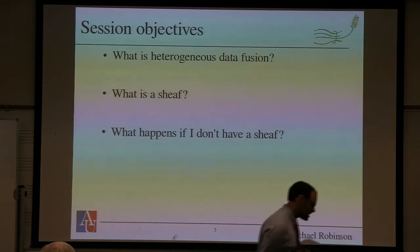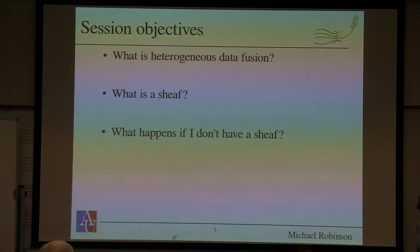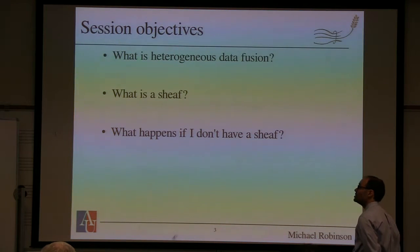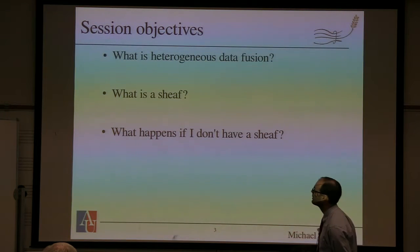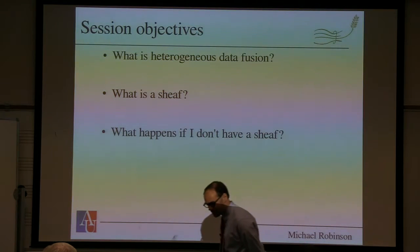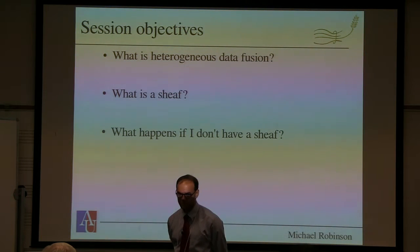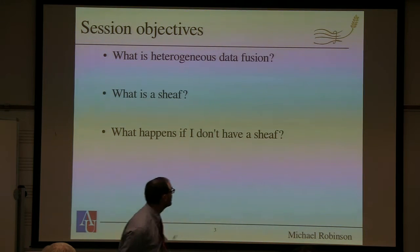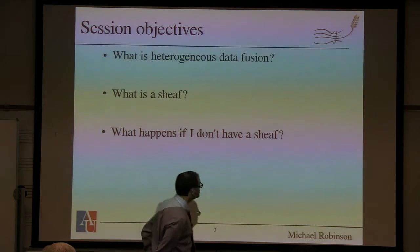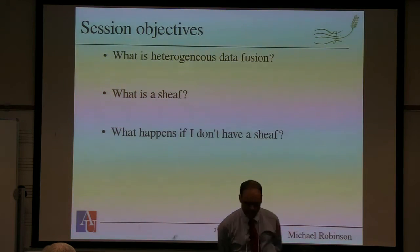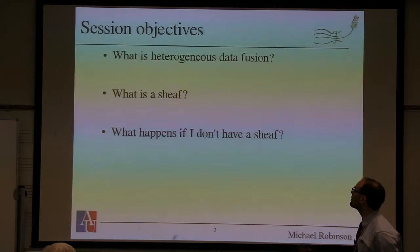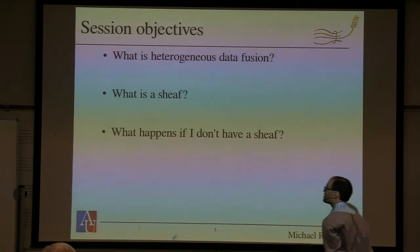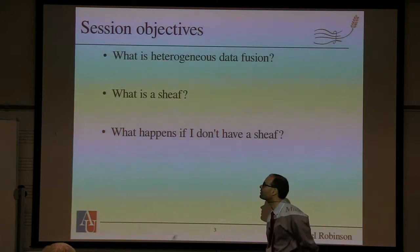I want to really say what some of the objectives are. What is data fusion? What is heterogeneous data fusion — using many different kinds of data? Sitting down and seriously thinking about what I really want data fusion to be will actually answer the next question: what is a sheaf? And once we've done that, you can ask: what if I have something that looks like a heterogeneous data fusion problem but I don't have a sheaf? What happens? I'm going to look at some examples.